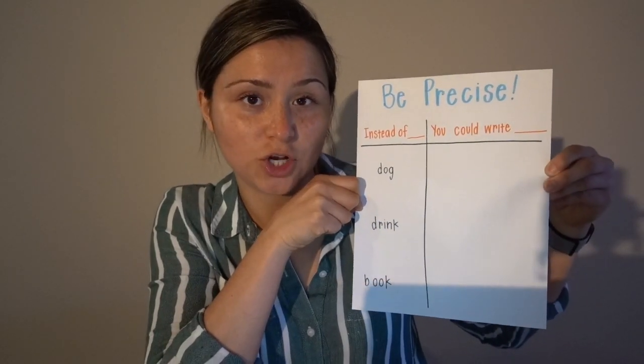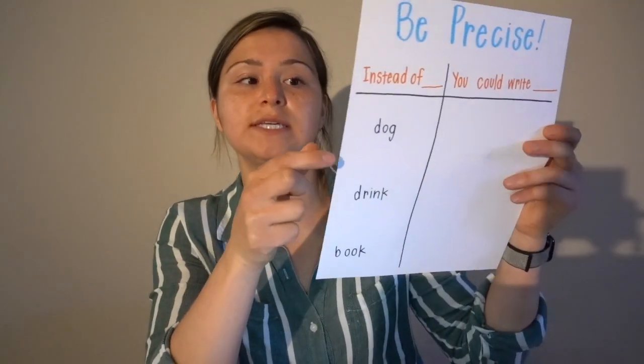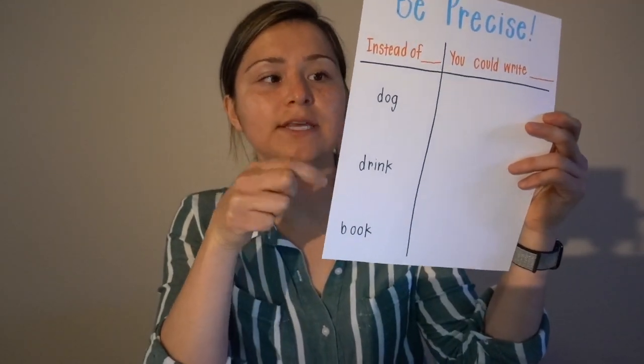I'm going to use a T-chart today to show us how to use this strategy. A noun is a person, place, or thing, but a lot of times they're very broad — they're not specific. What we want to do is change these into specifics.